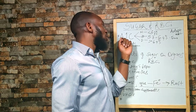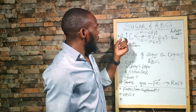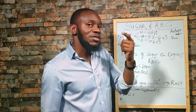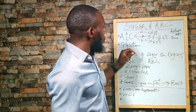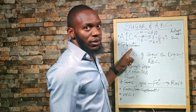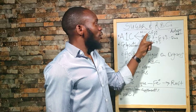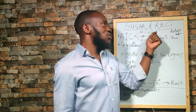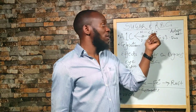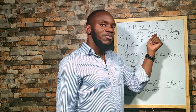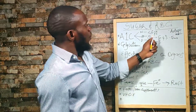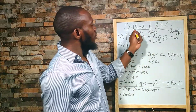This glycation is measured by a process called HbA1c — hemoglobin A1c — which measures the amount of sugar that is bound to your hemoglobin. Normal A1c levels are supposed to be 5.7%. Anything above 5.7% takes you into pre-diabetic and diabetic range.